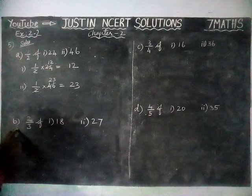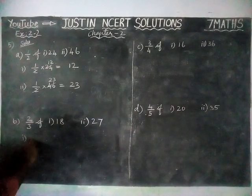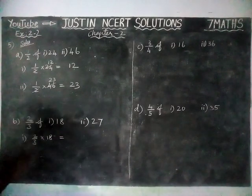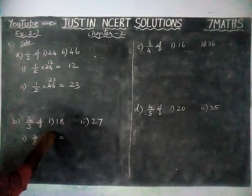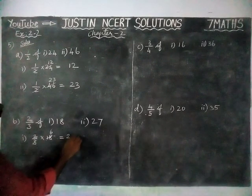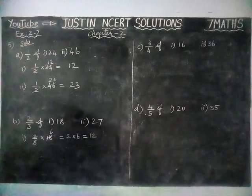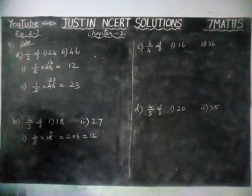Option B, first problem: 2 by 3 into 18 is equal to — we simplify by 3. 3 goes into 18 six times. Now, 2 into 6: 6 twos are 12. So, 2 by 3 of 18 is equal to 12.